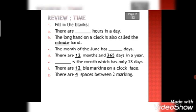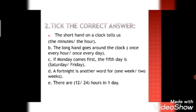Now look at the part G: there are dash spaces between two markings. If there are two markings, like 1 and 2, how many spaces are there? Four spaces.